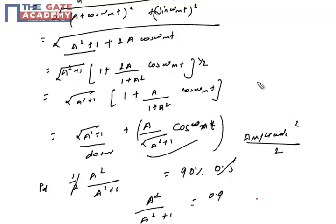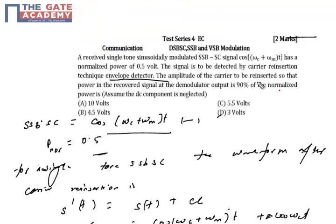Solving A²/(A² + 1) = 0.9, A comes out to be 3. Just insert a carrier, use the envelope detector, and solve for 2 or 3 steps to get the power. Hope the solution is clear. SSB-SC is a very important topic as far as your GATE exam is concerned. Thank you.